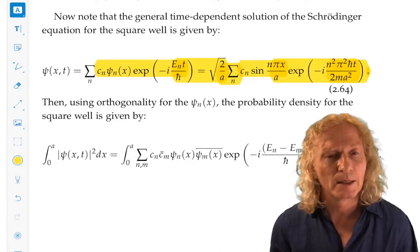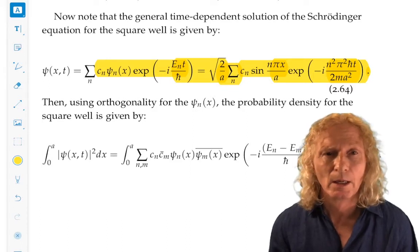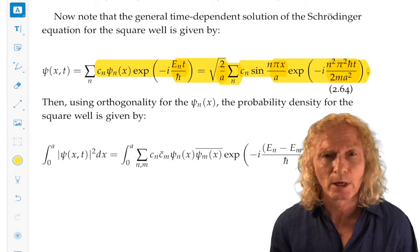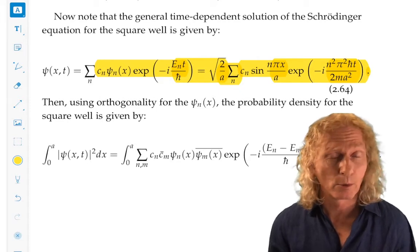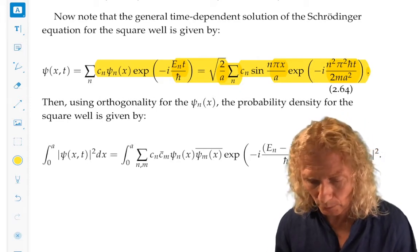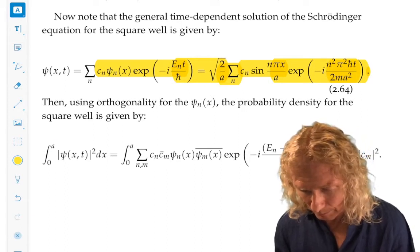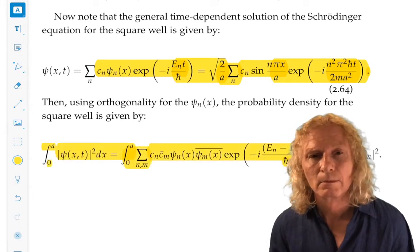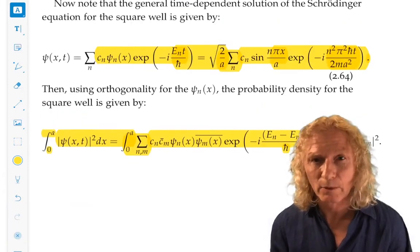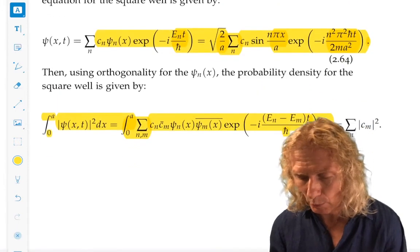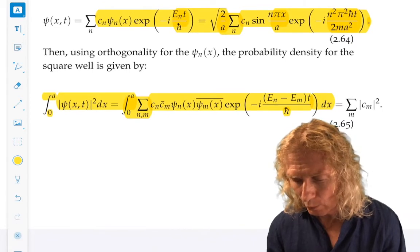Psi n and psi m, I did say, form an orthonormal set. They're eigenfunctions of the self-adjoint operator. We'll verify that again shortly. So they are orthogonal, they're orthonormal. And we can use orthogonality and get this expression for the probability density. Now, what we end up with at the very end is quite important. That this is the sum of the squares of the amplitude.